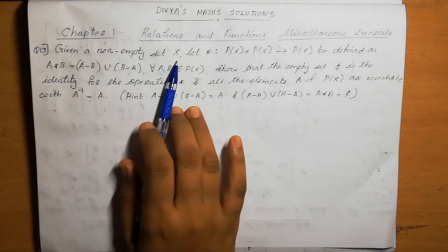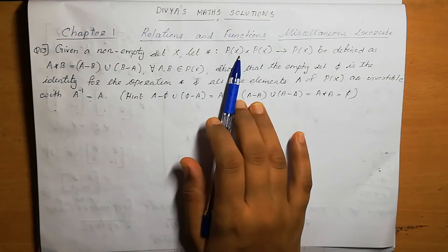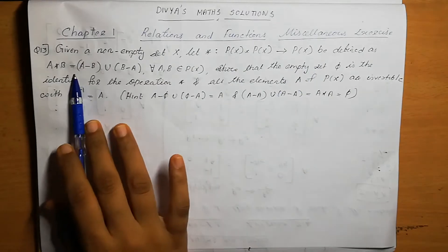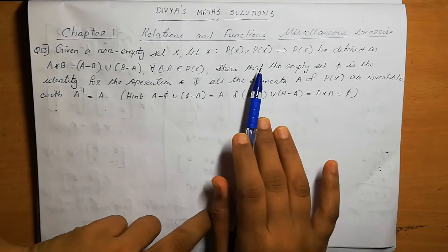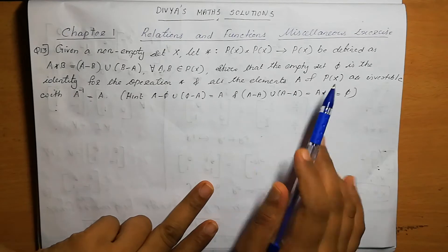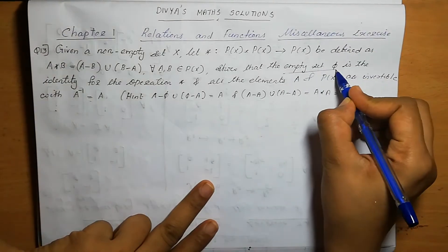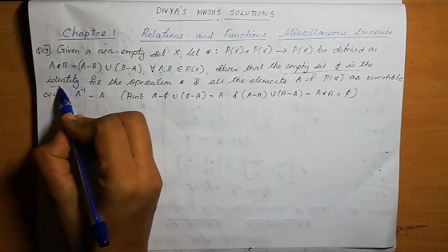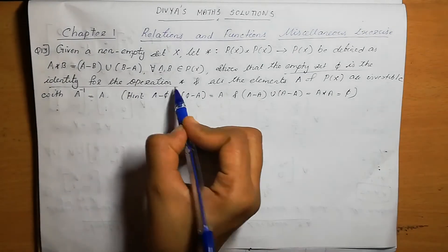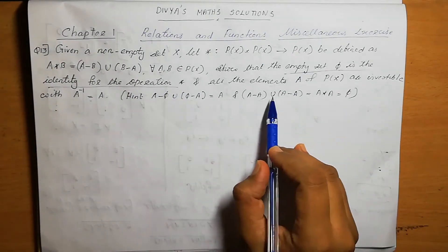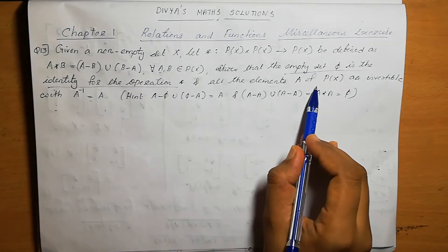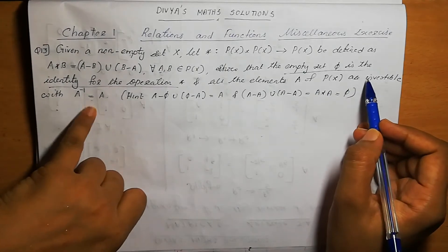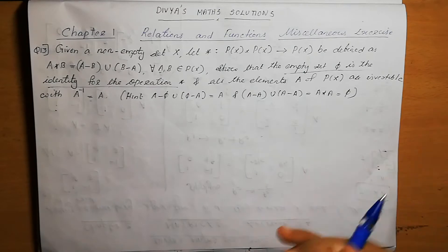Given a non-empty set X, let the operation star on P(X) be defined. We need to show that the null set φ is the identity for the operation star, and that all elements A of P(X) are invertible with A inverse equal to A. These two things we need to prove.